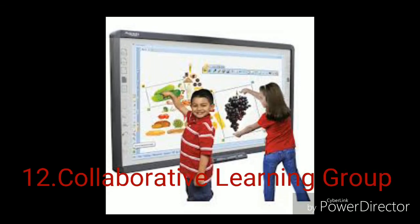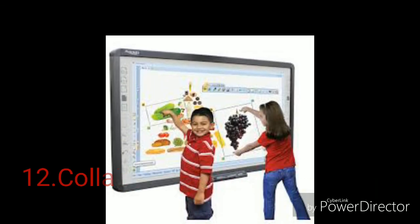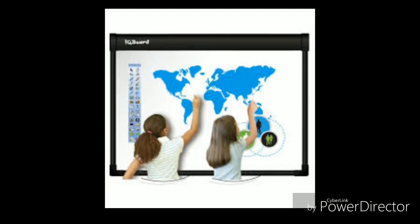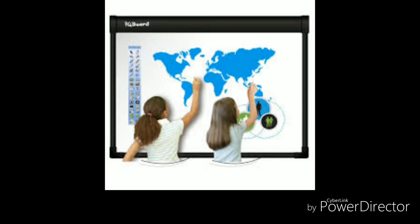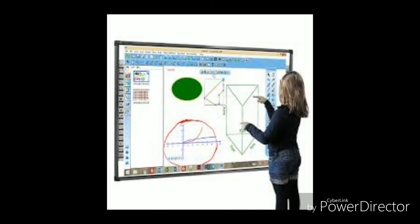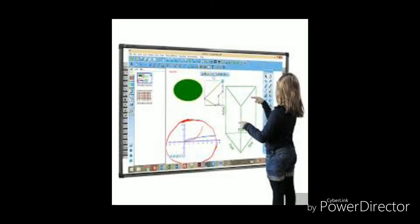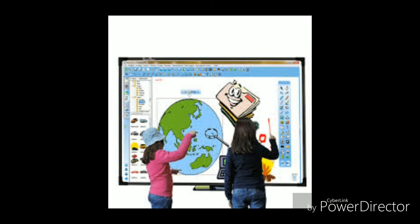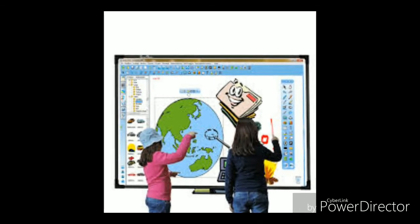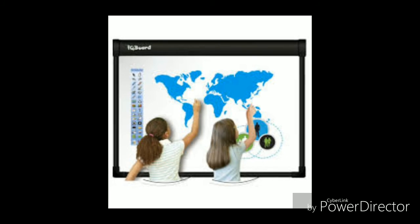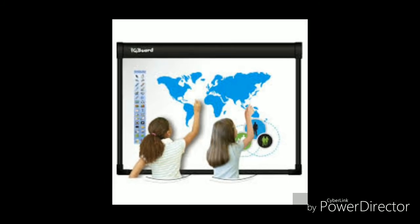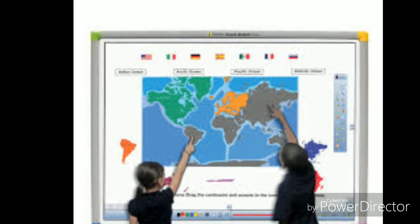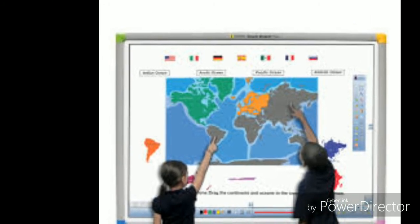12. Collaborative Learning Group: In collaborative learning group, the teacher assigns students into groups of 3 to 6 and they are given an assignment or task to work on together and asked to present in front of the whole class. The teacher should make sure that students in the group choose a leader and a note taker to keep them on track with the process.